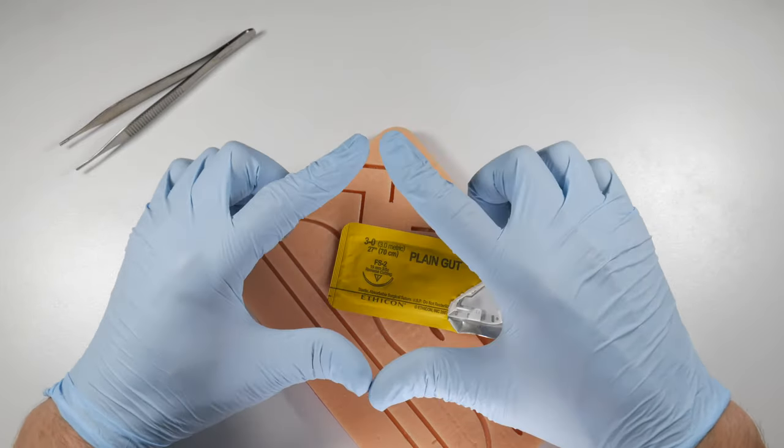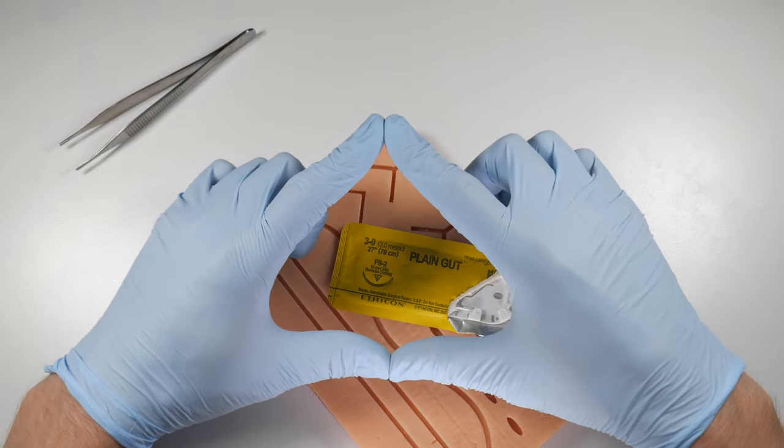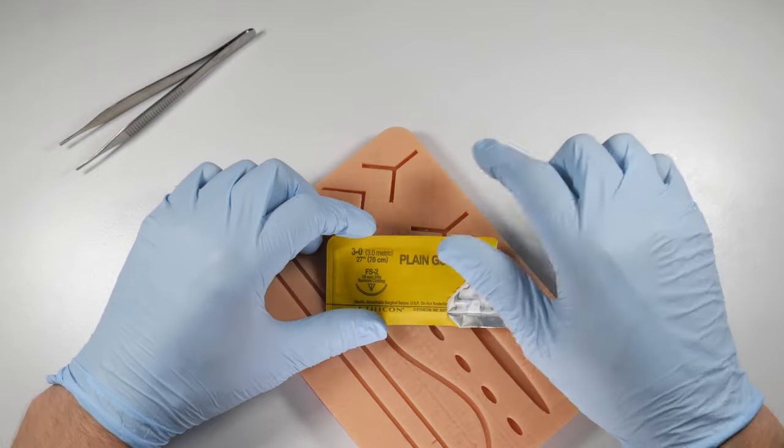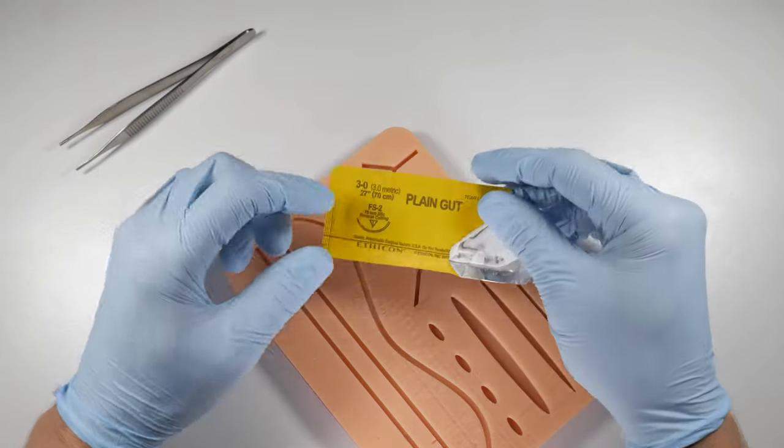A cutting suture needle would have a triangle that's facing the other way. The cutting edge would be on the concave surface of the needle.